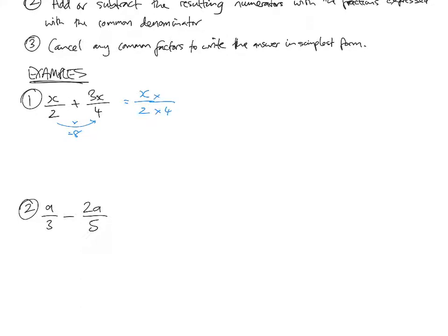What do you need to times 2 by to get 8? You times it by 4. To avoid changing the fraction, changing what the numbers were that you were adding and subtracting together, you need to times both the top and the bottom by that same number.